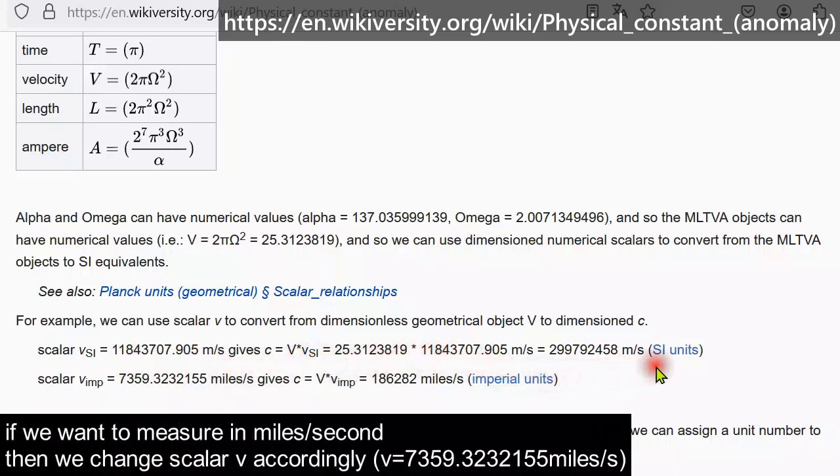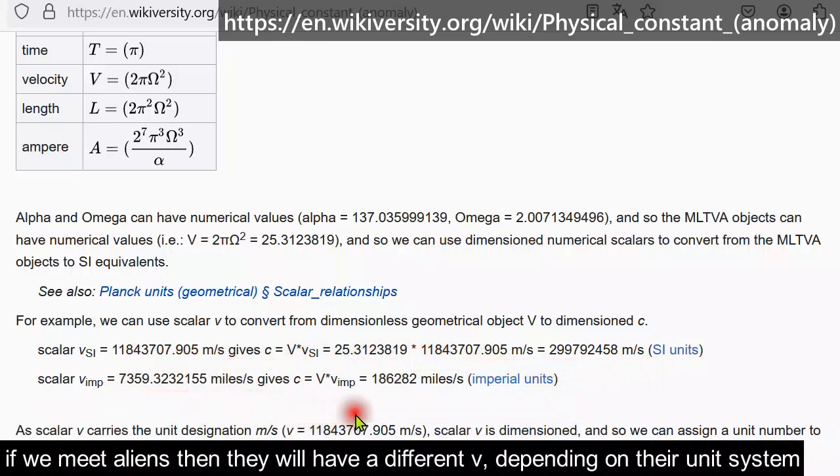If we want to measure in miles per second, then we change scalar v accordingly. If we meet aliens, then they will have a different v depending on their unit system.